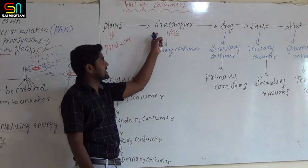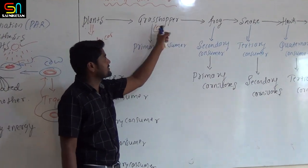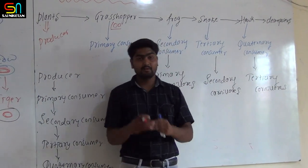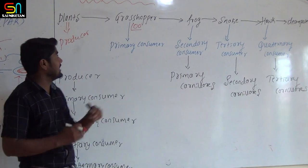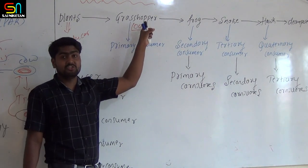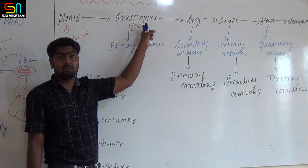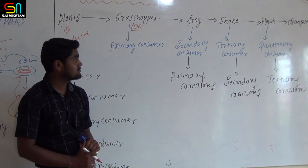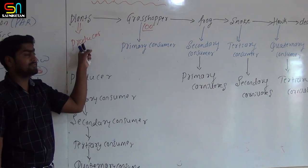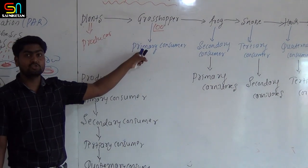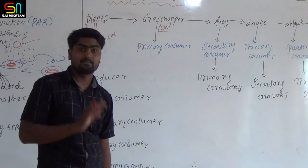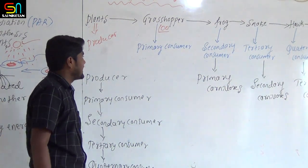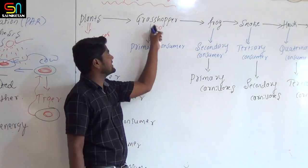Now, the levels of consumers: grasshopper, crow, snake, hawk — these are all consumers. First is the primary consumer. The organism which directly feeds on the producer is the primary consumer. These primary consumers are also called herbivores. Example for the primary consumer is the grasshopper.